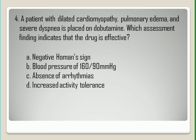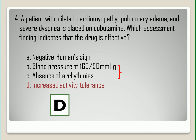Question Number Four. The correct answer is letter D. Dobutamine should improve the client's symptoms and the client should experience an increased tolerance for activity. Arrhythmias and hypertension are adverse effects associated with dobutamine, while a negative Homans' sign indicates absence of blood clots, which isn't a therapeutic effect of dobutamine.